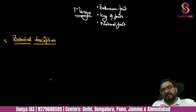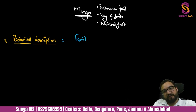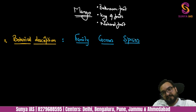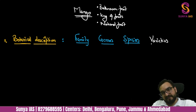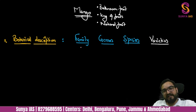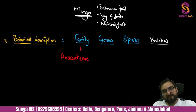First of all, botanical description — one should know this. Whenever we talk about botanical description, family comes first, then genus, then species. These three things should be known to us. For mango, the family is Anacardiaceae, genus is Mangifera, and species is indica. This is the edible variety we are going to talk about. Under the genus Mangifera, we have almost around 69 species — indica being the most important edible one.